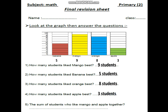The sum of students who like mango and apple together. Sum here is a keyword for plus. So in this question we will make plus. Mango and apple: 9 plus 3. 9 in my mind, 3 on my fingers. After 9 — 10, 11, 12. They are 12 students.